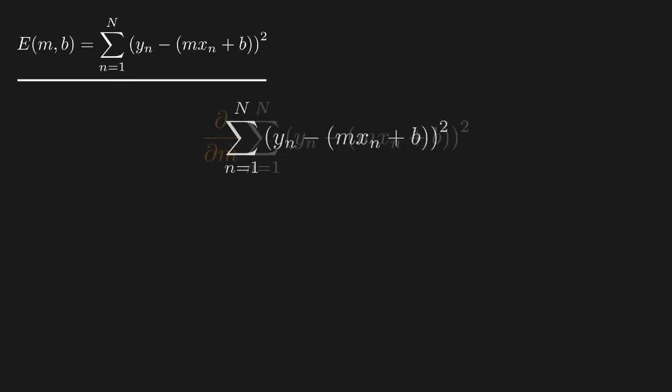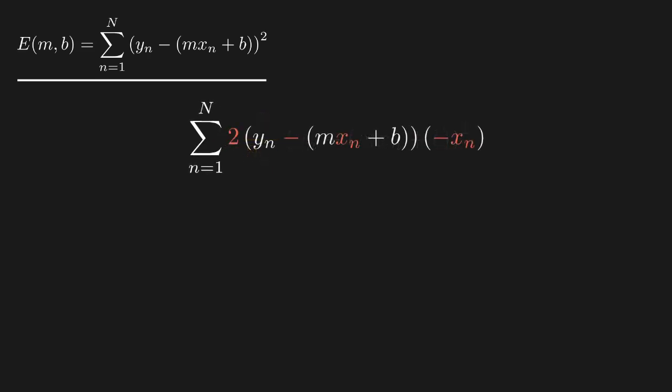To take the derivative with respect to m, we can bring the derivative operator inside the summation. Then we'll bring down the power of 2 and multiply by the coefficient of the m term, which is negative x sub n.